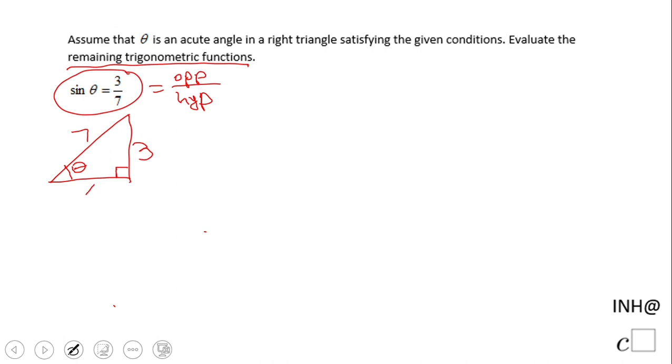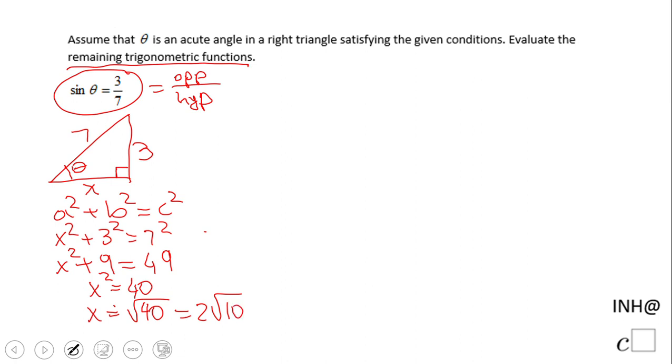Next we need to find the missing side. When I have two sides of a right triangle and need to find the third, use Pythagorean theorem: a squared plus b squared equals c squared. So x squared plus 3 squared equals 7 squared. We have x squared plus 9 equals 49, x squared equals 40, and x equals square root of 40, which simplifies to 2 square root of 10.